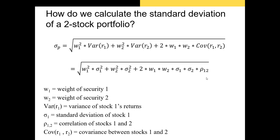If we only have correlation rather than covariance, we replace the covariance term with: two times the weight of stock one times the weight of stock two times the standard deviation of stock one times the standard deviation of stock two times the correlation coefficient between stocks one and two. This works because covariance equals the standard deviations of both securities multiplied by the correlation.